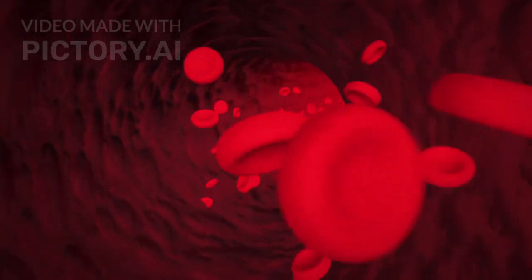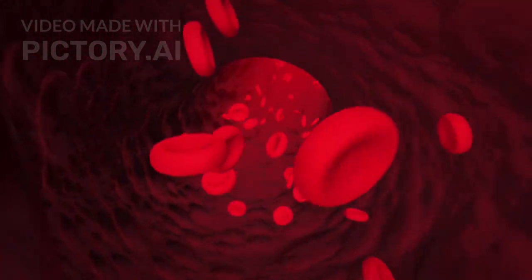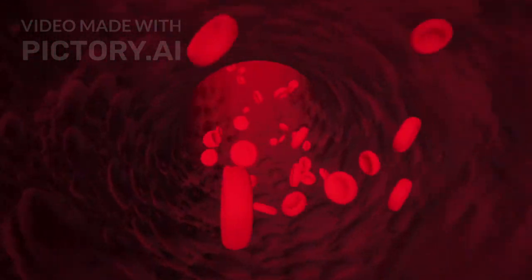Red blood cells, or erythrocytes, are the most abundant cells in the blood. They are circular, biconcave, and lack a nucleus in mammals.